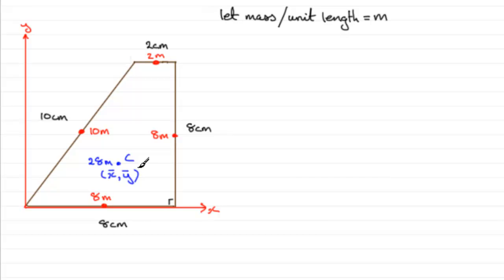But to form the moments equation, we need the coordinates of these points. So let's have a look at some of these points then. Let's start with this 8M mass. Clearly, it's halfway along here, so that's going to be at the point 4, 0. We'll mark that in as 4, 0.